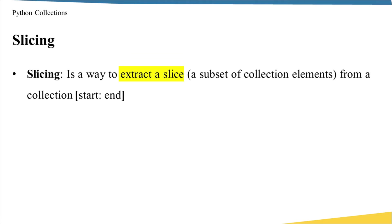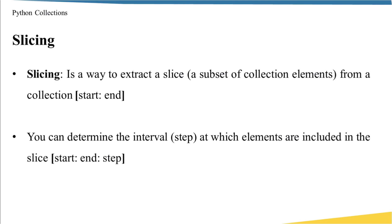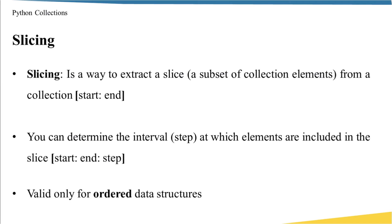Now let's talk about the last attribute, which is slicing. Slicing is a way to extract a slice — in other words, a subset of collection items from a collection. Usually, to use slicing, we also use the square bracket operator. You have to pass two numbers: from where to start your slice and where you want to end it, separated by a colon. Sometimes you don't want to move step by step, so you can determine the interval step at which elements are included in the slice by adding a third number — the step. Note that slicing is valid only for ordered data structures.